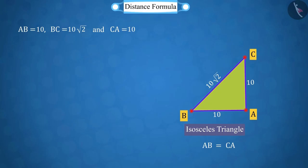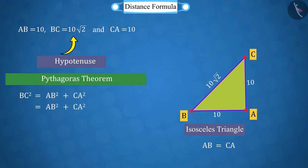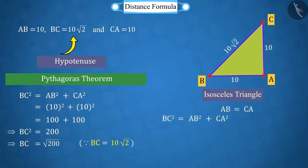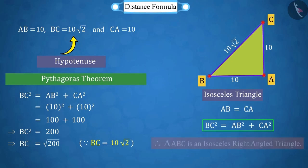From the measure of these three sides, we observe that the hypotenuse of this triangle will be BC, because the length of BC is the largest. Now, by placing the values of these three in the Pythagoras theorem, let's verify if it's a right-angled triangle. If we sum the squares of AB and CA, we get 200, which is equal to the square of BC. So, we can say that it is an isosceles right-angled triangle.